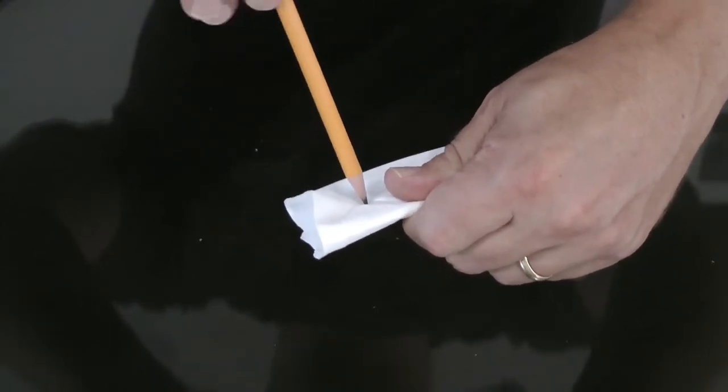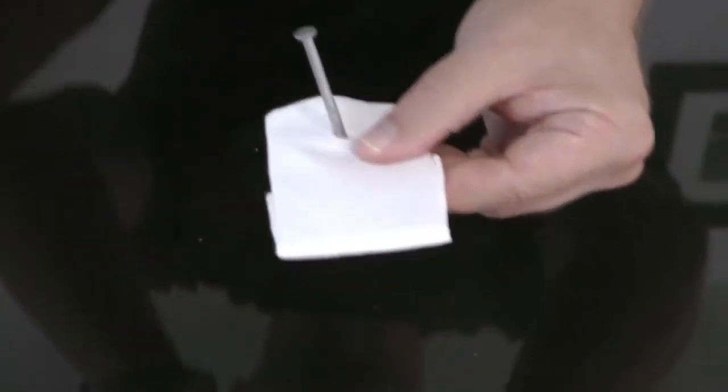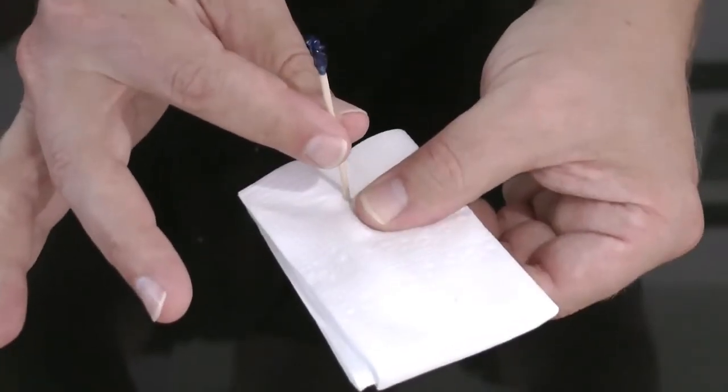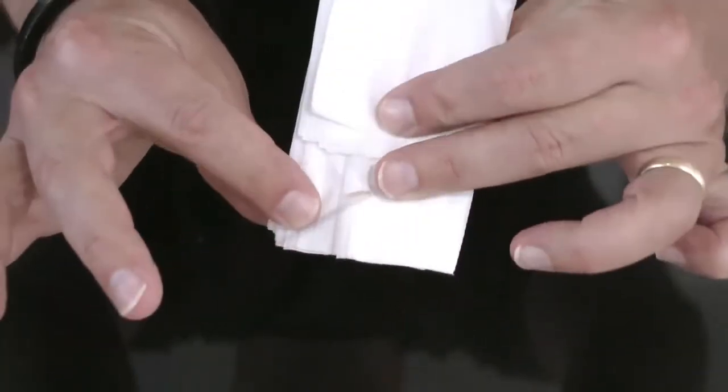Then a pencil, pen, toothpick, nail, or even a chopstick is pushed right through the credit card. A moment later, the card is unwrapped and returned to the owner.